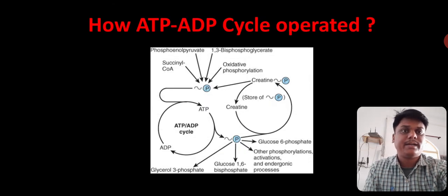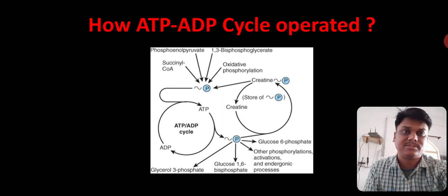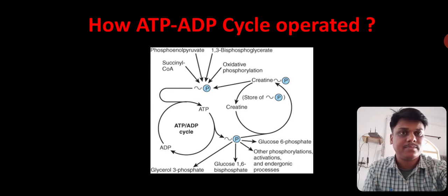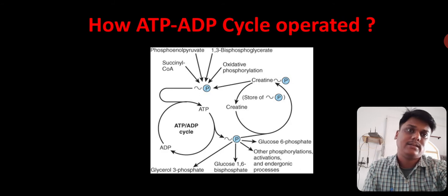How ATP-ADP cycle is operated? From where the phosphate comes? That is the actual major question. This phosphate comes from succinyl-CoA, phosphoenolpyruvate, 1,3-bisphosphoglycerate, oxidative phosphorylation processes, and creatine phosphate, etc. If you see the upper structures or upper molecules, that is all the high energy compounds and these high energy compounds will be able to give the phosphate to the ATP.